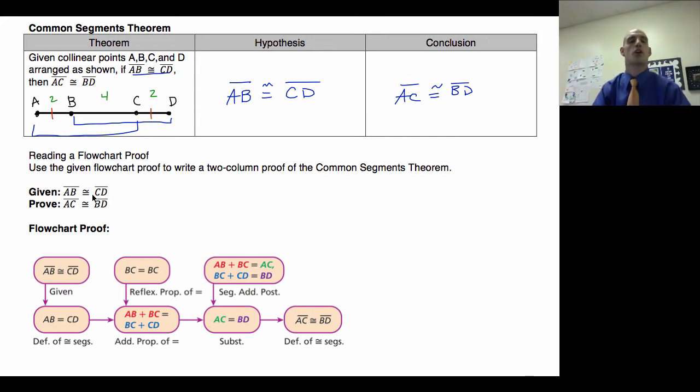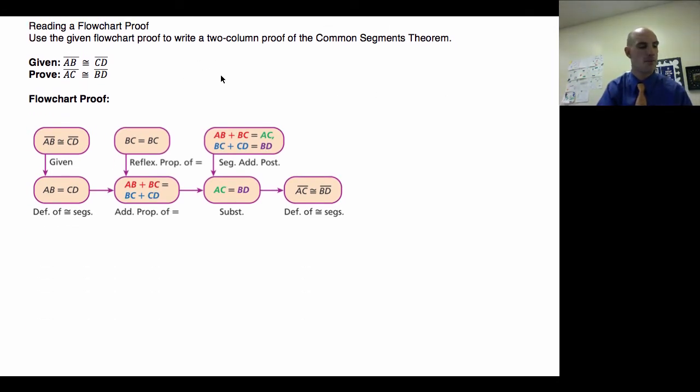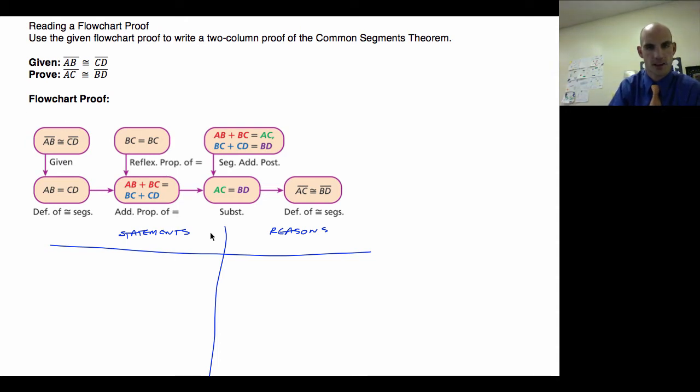Let's look down to this first flowchart. Use the given flowchart to write a two-column proof of the Common Segments Theorem. So we kind of know what's going on here. Let's start top left and move that way. What I'm going to do is I'm going to start with my statements and my reasons. Draw a semi-straight line down the middle, actually a pretty terrible line. I'll redraw that. That's better.